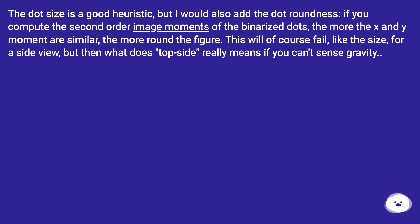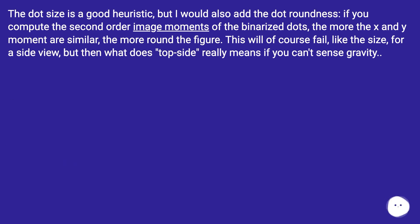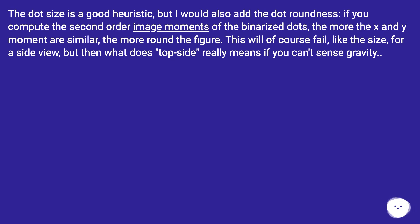The dot size is a good heuristic, but I would also add dot roundness. If you compute the second-order image moments of the binarized dots, the more the x and y moments are similar, the more round the figure. This will of course fail, like the size approach, for a side view — but then, what does 'top side' really mean if you can't sense gravity?